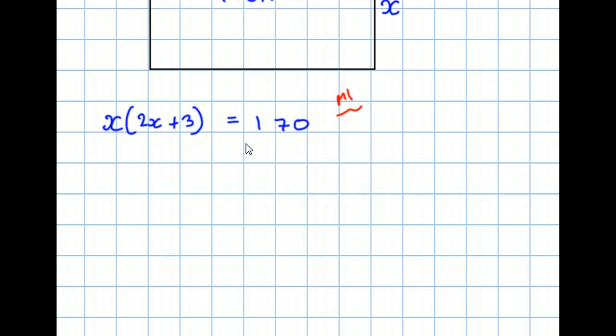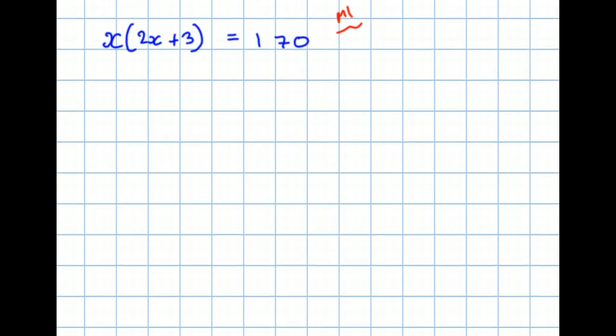Now, now we're focused purely on algebra. So let's see what we do now. Expand the bracket so we get 2x squared plus 3x minus 170 equals 0. It's the standard practice. Make the quadratic equal to 0.